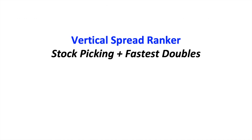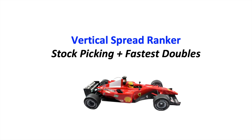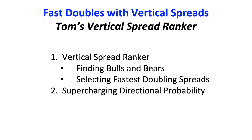So in this video, I want to talk to you about the vertical spread ranker within Tom's tools. In a nutshell, what does it do? It picks stocks — it picks bullish and bearish stocks and finds the fastest doubling vertical spreads for you. It's one-stop shopping. Click a button and you have some trades to consider. We're going to cover fast doubles with vertical spreads using Tom's vertical spread ranker, including how it finds bulls and bears, how it selects the fastest doubling spreads, and some ideas to improve your directional probability even further.